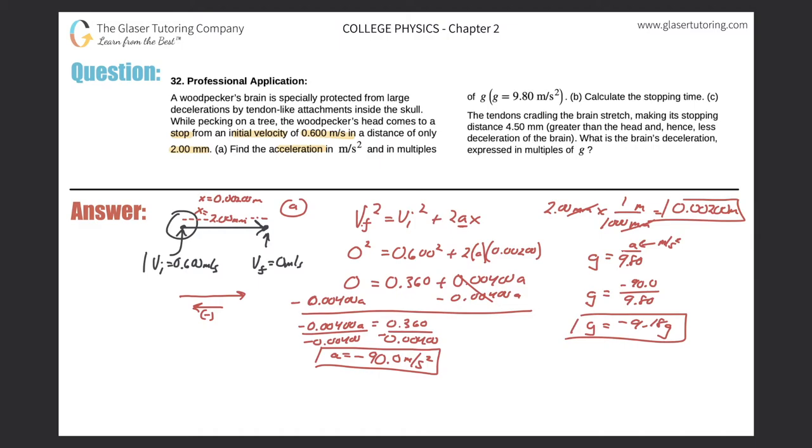Let's take a look at part B. Now it says calculate the stopping time. So it wants me to calculate the time that it took for the bird to have its head go from this velocity to zero. So again, I'm going to think of a formula that relates my givens. I'm going to be looking for a formula that relates initial velocity, final velocity, time, and displacement.